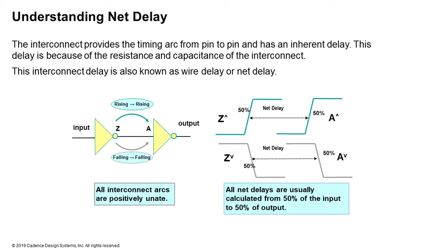You use different metal layers to connect different cells in your design, and these metal layers become the interconnects or wires. They inherently have a delay because of the resistance and capacitance of the interconnect itself, or the metal layer itself.